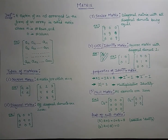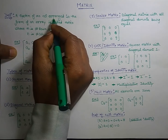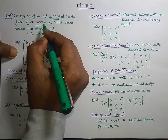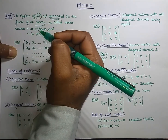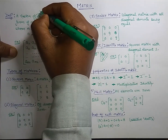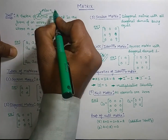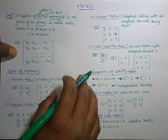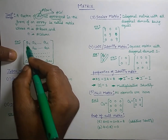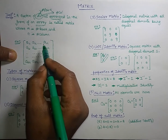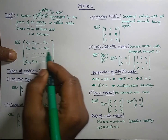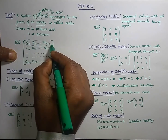Hello friends, welcome to the show. In this video we are going to learn about matrices and types of matrices. A matrix is an arrangement of an array which consists of m by n numbers, where m represents the number of rows and n represents the number of columns. It is a kind of array: a11, a12, up to a1n, and so on up to amn.